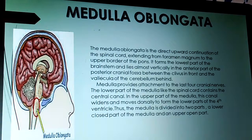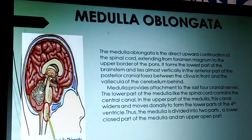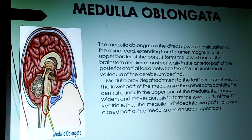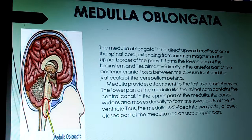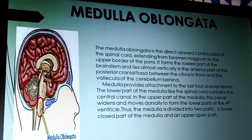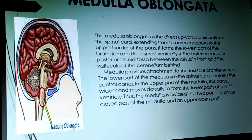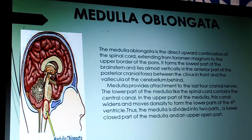The medulla oblongata is the direct upward continuation of the spinal cord, extending from the foramen magnum to the upper border of the pons. It forms the lower part of the brainstem, lying almost vertically in the anterior part of the posterior cranial fossa. Medulla provides attachment to the last four cranial nerves. The central canal in the lower part of the medulla widens and moves dorsally to form the lower part of the fourth ventricle. Thus, the medulla is divided into a lower closed part and an upper open part.